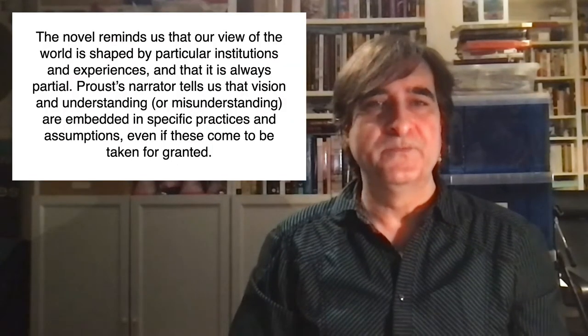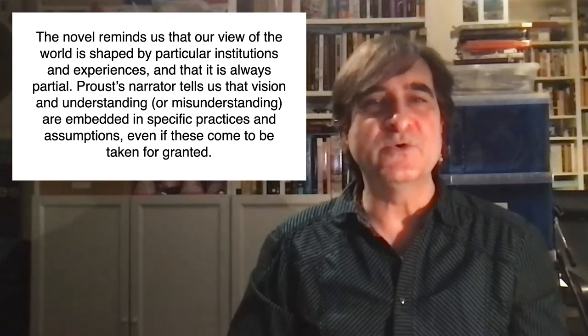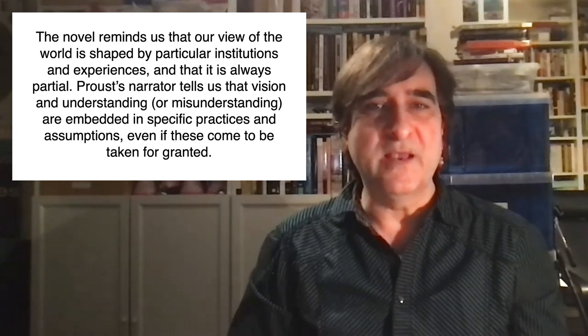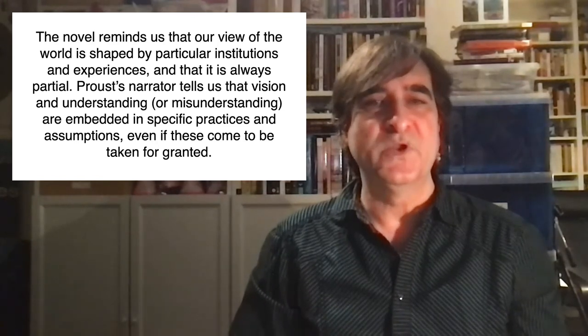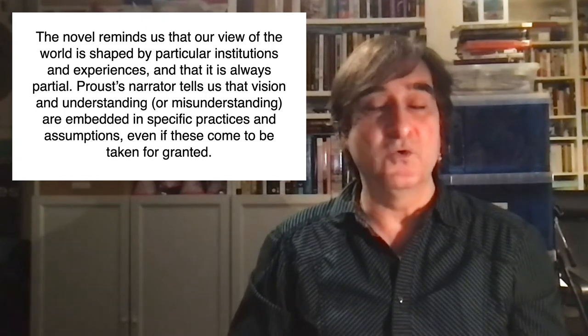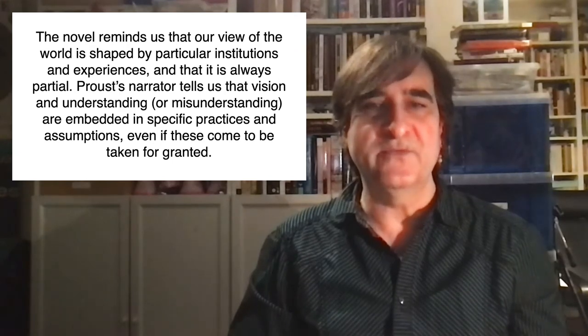And towards the end is another scene at a window, this time with the narrator looking in rather than looking out, as he accidentally spies on an amorous tryst between a neighbour's daughter and an older woman — an unexpected glimpse into private lives that is abruptly terminated when the friend came and closed the shutters and the window. The novel reminds us, therefore, that our view of the world is a perspective shaped by the architecture of particular institutions and experiences, and that it is always partial, even if we see more than we should, or more than we know we are seeing. In contrast to the universalising pretences of realism, with its invocation of an all-seeing eye, Proust's narrator tells us that all vision and understanding — or misunderstanding — are embedded, materially and socially, in specific practices and assumptions, even if these come to be taken for granted.